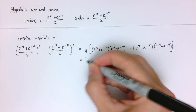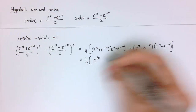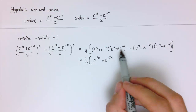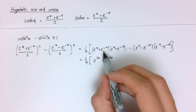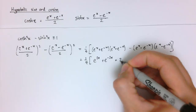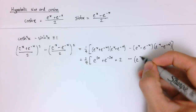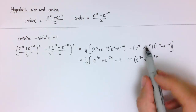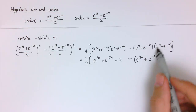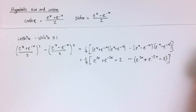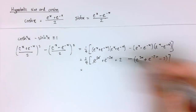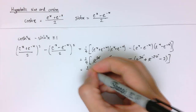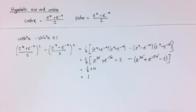Multiplying these out: from the first bracket I get e to the 2x, plus e to the minus 2x, plus 2. From the second bracket I get e to the 2x plus e to the minus 2x minus 2, and I'm subtracting that. So the e to the 2x terms cancel, the e to the minus 2x terms cancel, and I'm left with 2 minus minus 2, which is 4. So this is a quarter times 4, which equals 1. And so we've proved that identity is true.